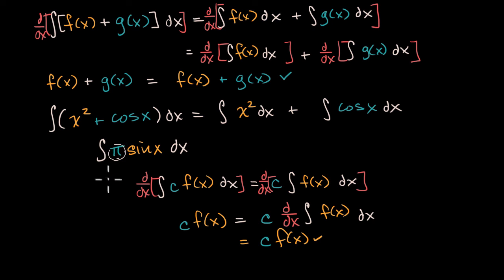Pi is in no way dependent on x. It's just going to stay being equal to pi. So we can take it out and that is going to be equal to pi times the integral of sine of x.